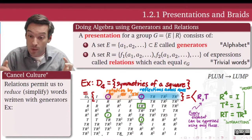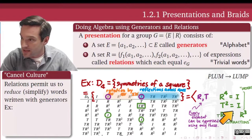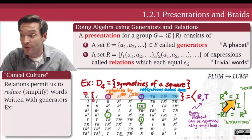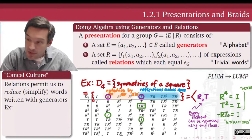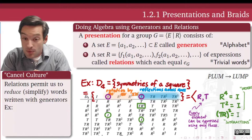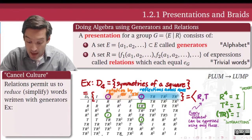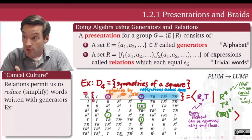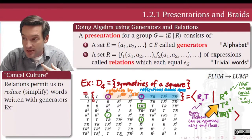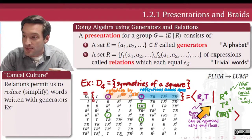We can rewrite this as a relation — a trivial word — by moving all elements to one side of the equation. Multiplying both sides by T cancels the T and gives TRT = R cubed. Then multiplying on the right by another R turns this into R to the fourth, which is the identity. So this relation becomes TRTR equals identity, or equivalently, the quantity TR squared equals the identity. This gives us a list of three trivial words: R to the fourth, T squared, and (TR) squared. These three relations, together with the generators R and T, form a complete presentation for the symmetry group of the square — the dihedral group.